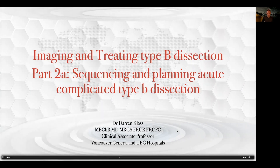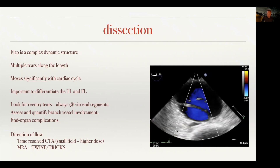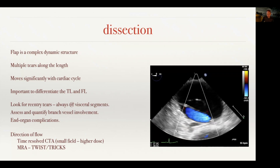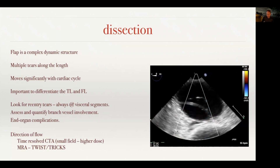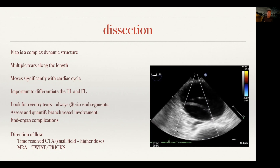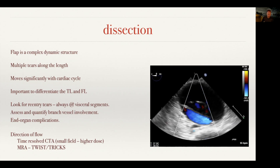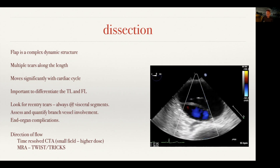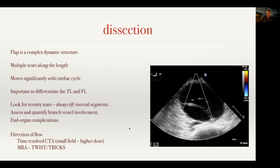Part two of this talk covers sequencing and planning of treatment for dissection. The problem with dissection is its complexity. As seen in this transesophageal echo, there is a true lumen that can be compromised by the false lumen. During systole, the true lumen gets smaller — every heartbeat is actually compromising flow to end organs, which is exactly the opposite of what you want. It's important to identify the true and false lumen, which is why intravascular ultrasound is so critical.